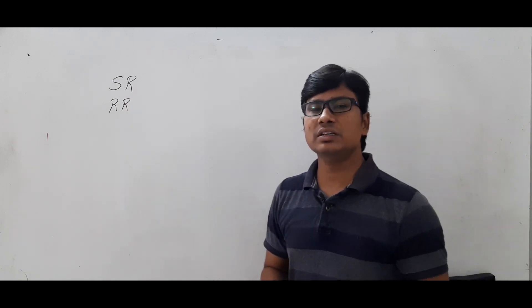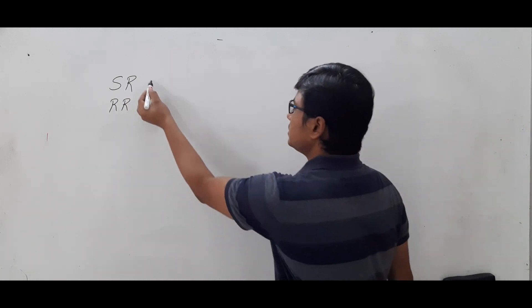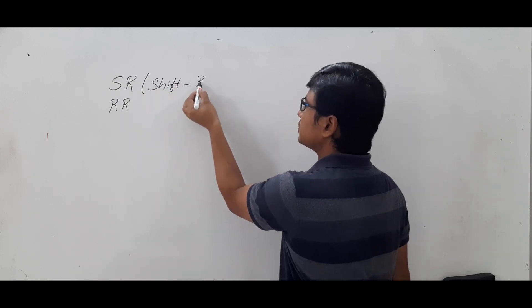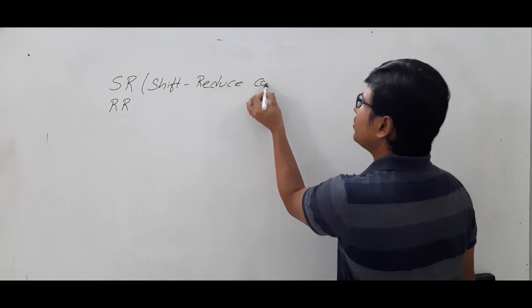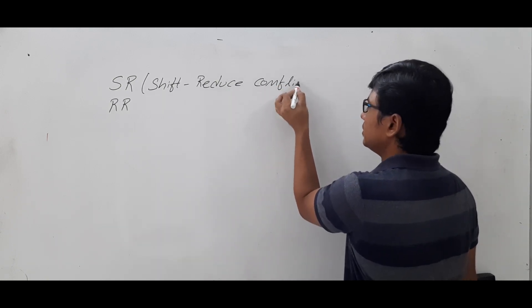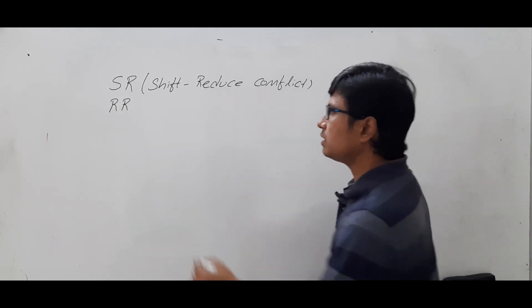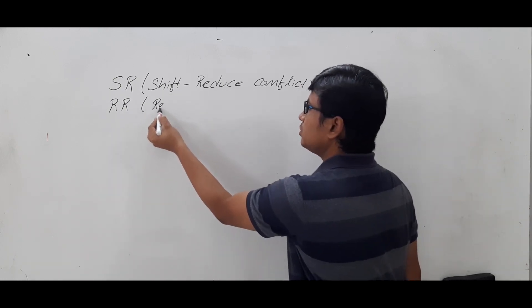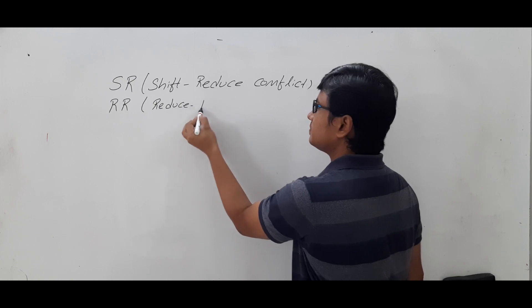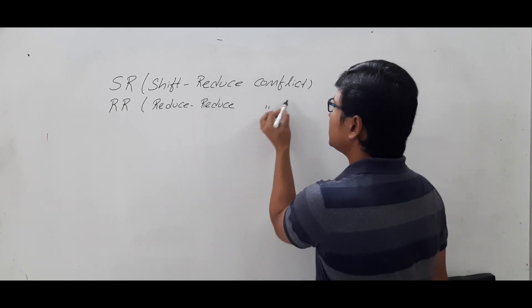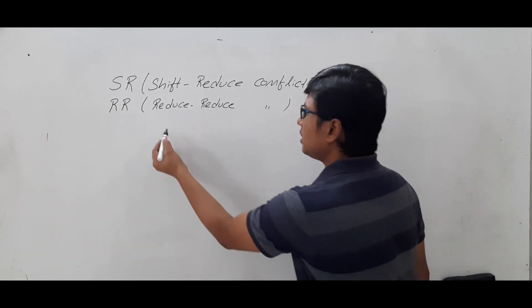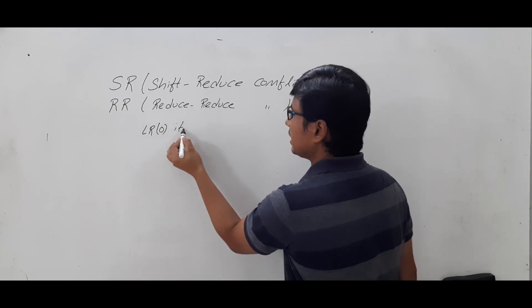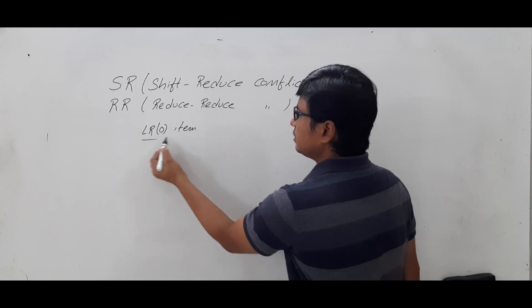In this video I want to discuss about SR and RR conflicts. SR conflict means shift-reduce conflict — S stands for shift, R stands for reduce, and conflict means a problem. Similarly we have RR conflict which is reduce-reduce conflict. Let me first discuss in terms of LR0 items, then I will discuss with LR1 items.